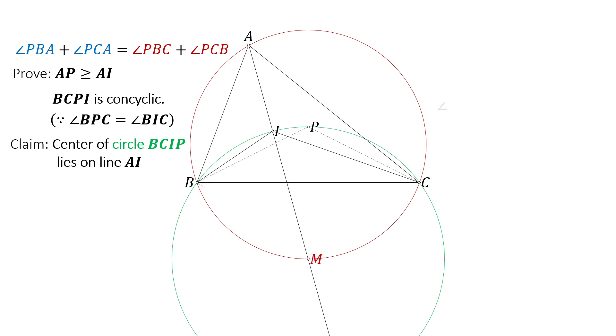From the diagram, we know that angle IBM equals angle CBI plus angle CBM. Since BI bisects angle B, angle CBI equals angle ABI. Arc MC equals arc MB, so angle CBM equals angle BAM. In triangle ABI, the sum of angle ABI and angle BAM equals exterior angle BIM. Now we have angle MBI equals angle BIM, and thus MB and MI are equal.